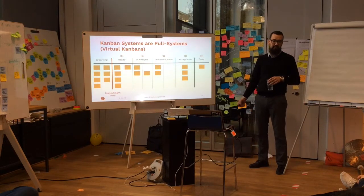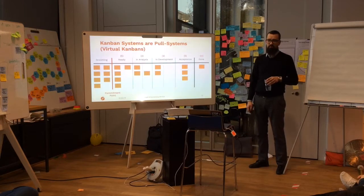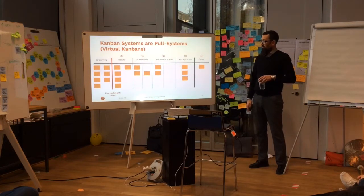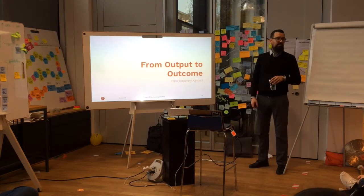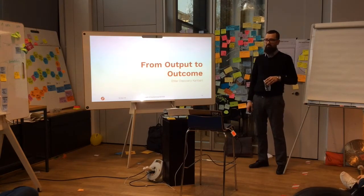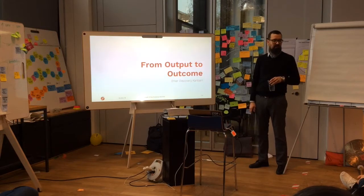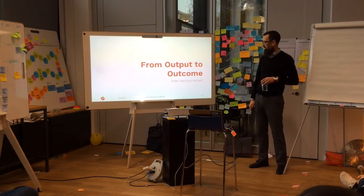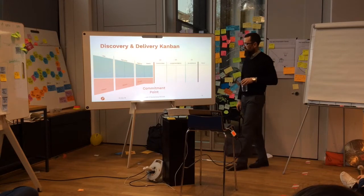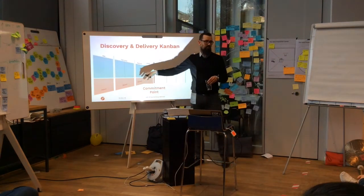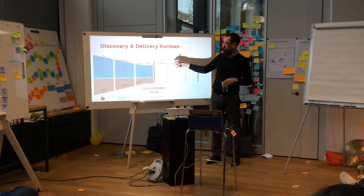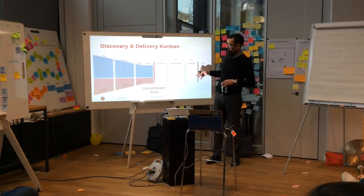That's the basics behind a delivery system using Kanban or pull systems. But that's not it - that's only producing stuff. Output is not necessarily outcome. So how can we deal with that? We have something called Discovery Kanban - everything left of the delivery Kanban system. What you do there is actually filter and develop options.